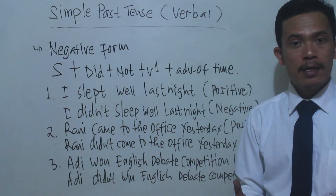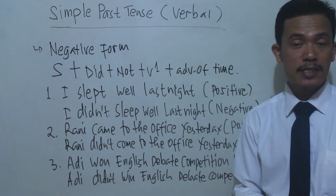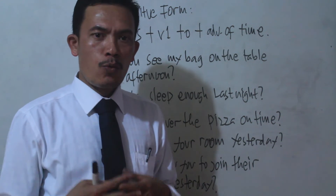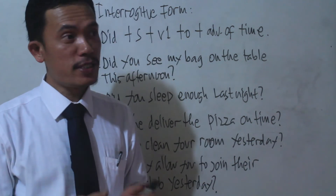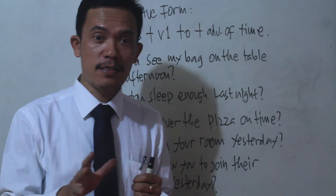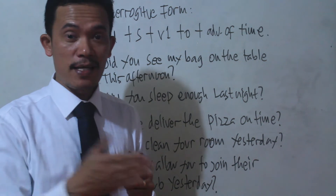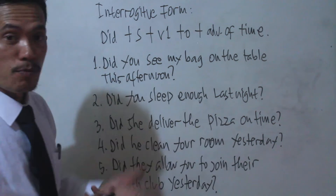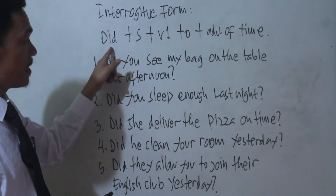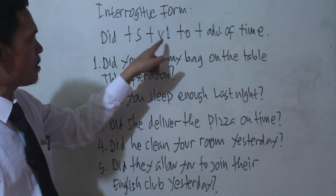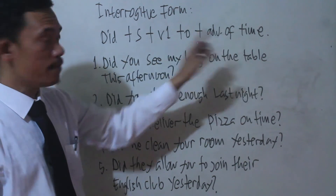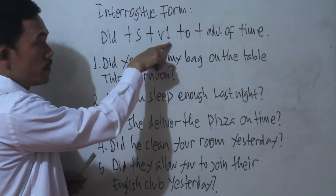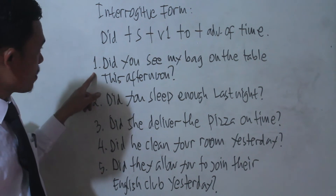This is how you change a positive sentence into a negative statement when telling experiences or stories that happened in the past. When we change a sentence into interrogative form — for example, when you are making a question about what someone did, where she went, or what they did in the past — here is the formulation: Did + subject + verb 1 + object + adverb of time.